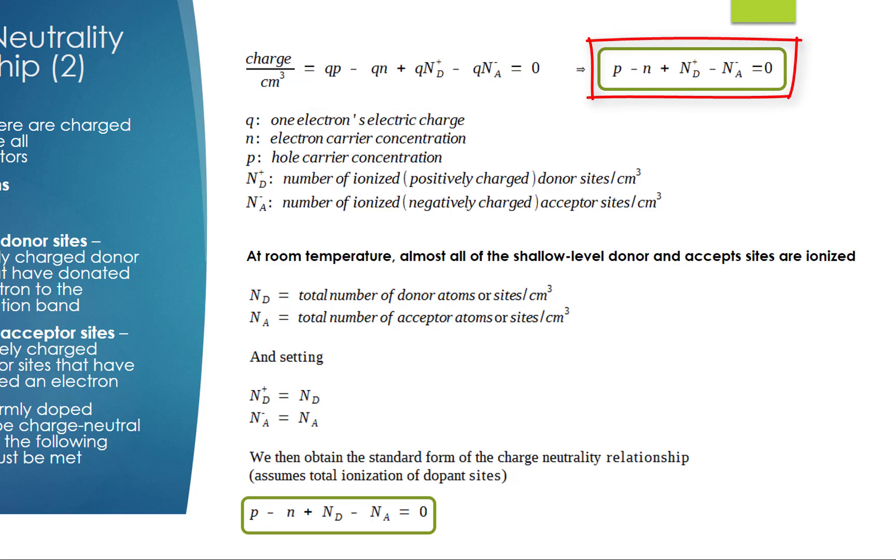This concludes that P minus N plus N_D+ minus N_A- is zero. At room temperature, there is enough thermal energy and almost all of the shallow level donor and acceptor sites are ionized. So we will define N_D as the total number of donor atoms or sites per cubic centimeter, and N_A as the total number of acceptor atoms or sites.